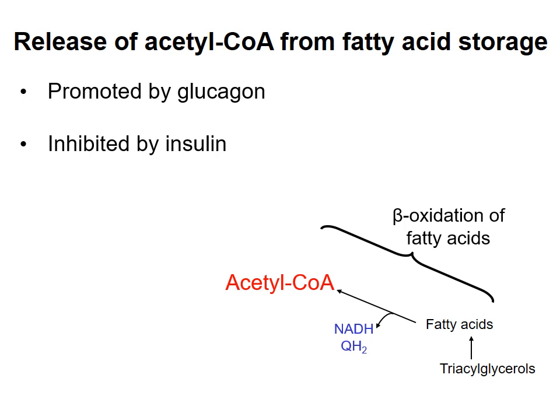Conversely, when blood glucose is high, insulin is produced, and this hormone inhibits the breakdown of triacylglycerols. When glucose is high, there's no need to stimulate production of ATP from fatty acids.